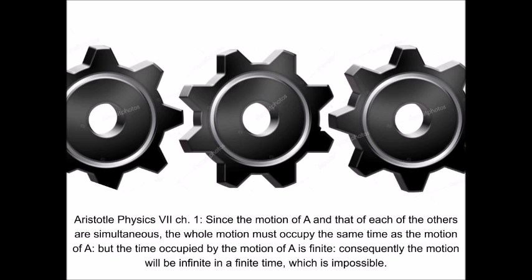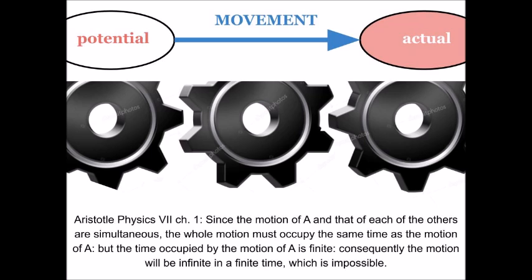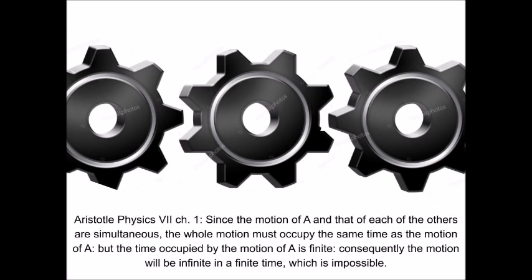Since the motion of A, call that center gear there, call that gear A. Since the motion of A and that of each of the others are simultaneous, the whole motion must occupy the same time as the motion of A. But the time occupied by the motion of A is finite. Consequently, the motion will be infinite in a finite time, which is impossible. You cannot have infinite motion in a finite time. That's what Aristotle says. Again, you cannot have infinite motion in a finite time. But why? Because again, time and movements, time and motion go together. They really do go together. You have to believe that.